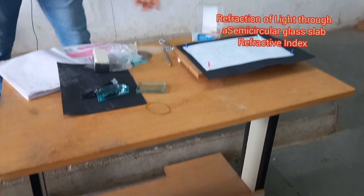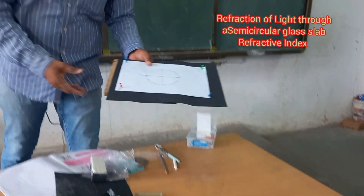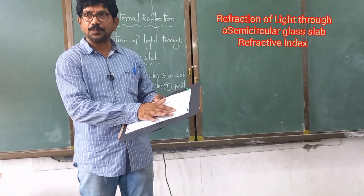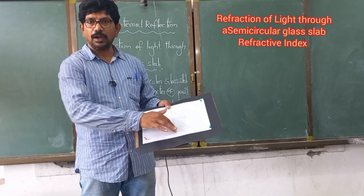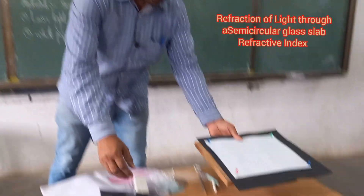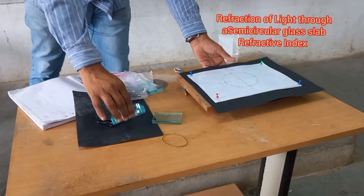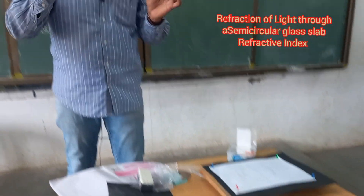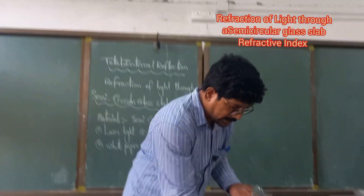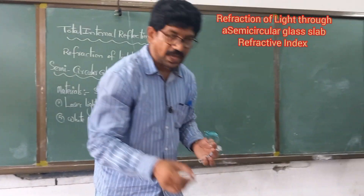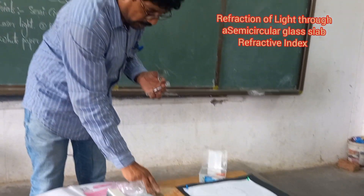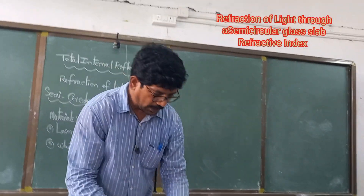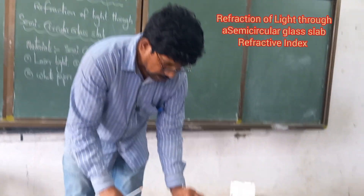For that experiment, what are the materials needed? We need a drawing board, a white paper, and drawing pins. Next, a semicircular glass slab. Next, a laser light. Next, a pencil. And next, a protractor.